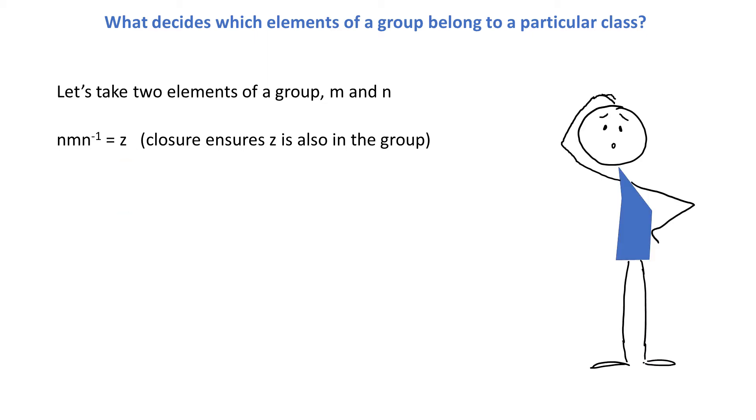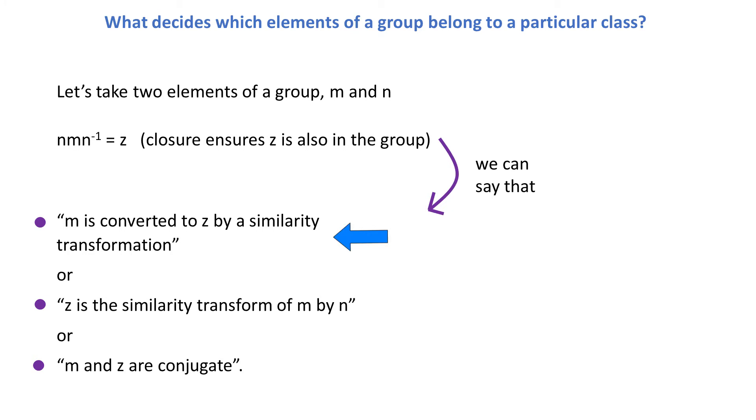How to describe this relationship? We can say that m is converted to z by a similarity transformation, or that z is the similarity transform of m by n, or most often that m and z are conjugate. So elements of the same class are conjugate. That's it. So let's do some examples.